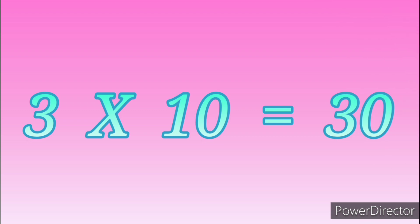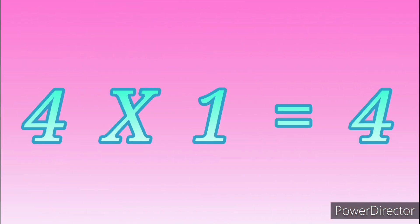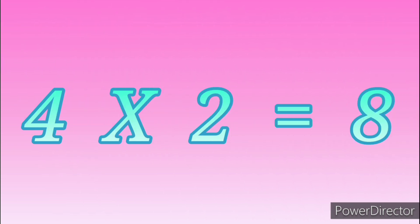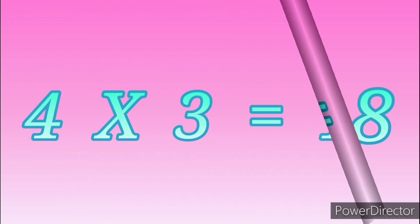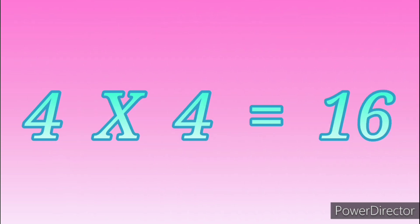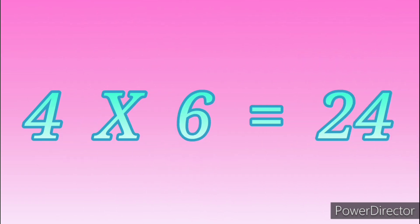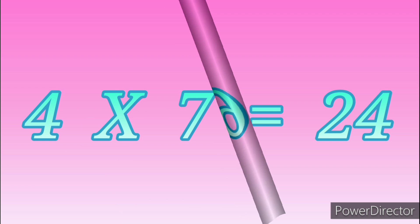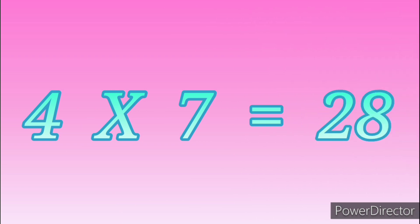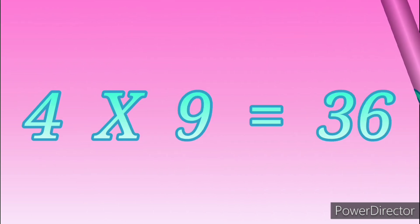3 tens are 30. Table of Four: 4 ones are 4, 4 twos are 8, 4 threes are 12, 4 fours are 16, 4 fives are 20, 4 sixes are 24, 4 sevens are 28, 4 eights are 32.